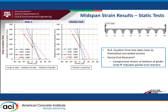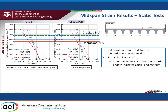The mid-span strain results for the stop location test along path 1 and the middle path are shown here. In this plot, solid lines correspond to test results while dotted lines represent FEM results. The top of the slab is represented by the purple line, the golden line represents the slab-girder interface, and the bottom of the girder is represented by the orange line. These strain results were used to determine the neutral axis location for the corresponding girders and compared with the theoretical uncracked and cracked neutral axis. The neutral axis locations determined from the test data were found to be closer to the theoretical uncracked section. Small compressive strains were observed at the bottom of girder ends, indicating the presence of limited partial end restraint.